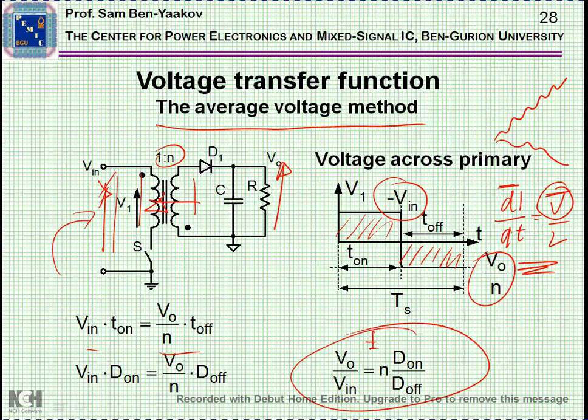Now, the difference between this relationship and the one for the Buck-Boost is this N number. So by having a turns ratio you can in fact get extra gain, which is of course very useful in many applications.